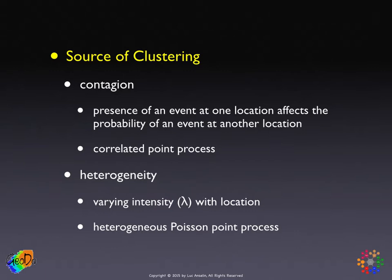The other source is heterogeneity—there is no correlation whatsoever, but the cluster occurs because there is a different intensity. The intensity of the process varies with location: in some locations you have high intensity, in others low intensity. In biological examples, such as forestry, this could have to do with soil quality—in a particular soil you can have many trees, in another you don't. So you find clusters of trees in good soil, but it has nothing to do with contagion. It has to do with spatial heterogeneity. A formal expression of this for point patterns is the heterogeneous Poisson point process.